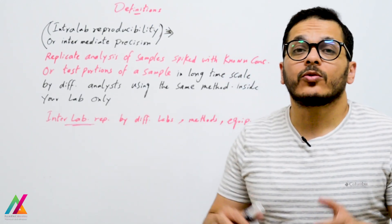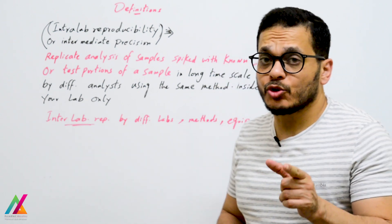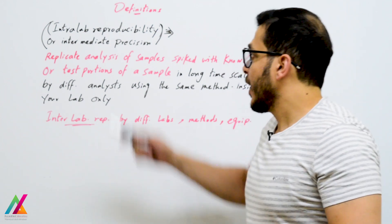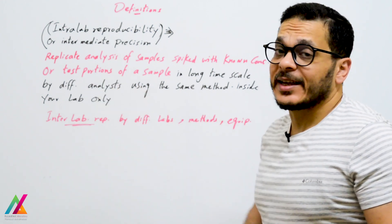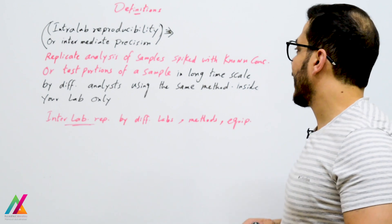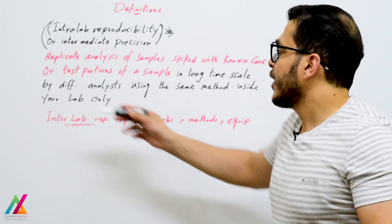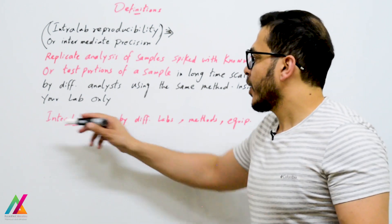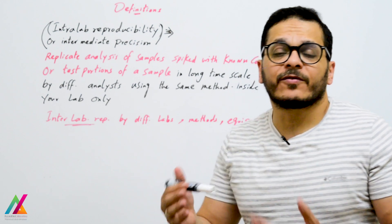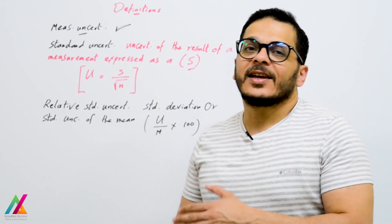There are two types of reproducibility: inter-lab reproducibility and intra-lab reproducibility. Intra-lab reproducibility, also called intermediate precision, involves replicate analysis of test portions in a long time scale by different analysts using the same method and equipment — within your lab only. Inter-lab reproducibility involves different laboratories, different methods, and different equipment. Since you validate or verify methods inside your own lab, you should use intra-lab reproducibility.